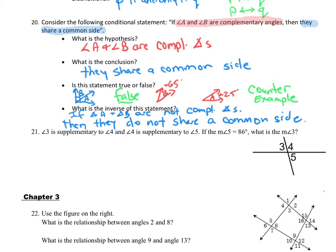Number 21: we've got two lines intersecting and three angles to consider. Angle 3 and angle 4 are supplementary — they're a linear pair, so that's the definition of linear pair. It also states that angle 4 and angle 5 are supplementary, and the measure of angle 5 is 86 degrees. What is the measure of angle 3?